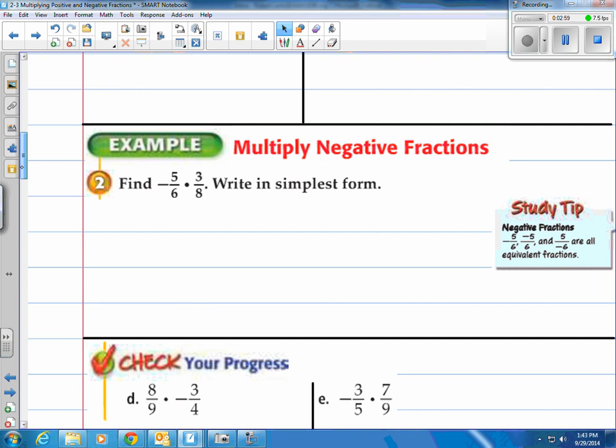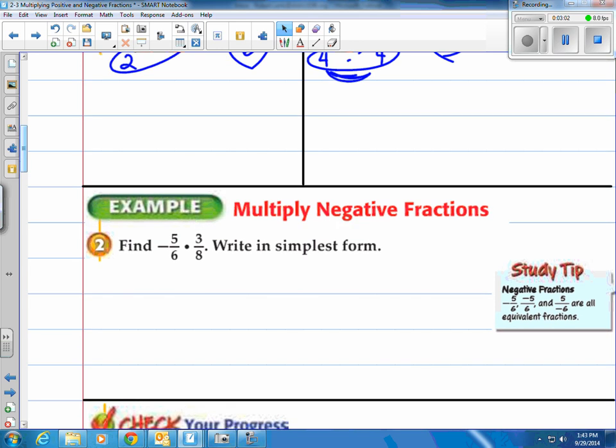All right, next concept, multiplying negative fractions. Same as multiplying positive fractions, except use the rules that you already know. We've got a negative fraction times a positive fraction. Well, when we have a negative times a positive, we get a negative answer.